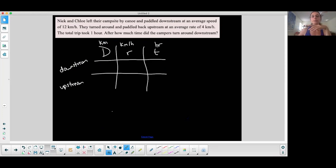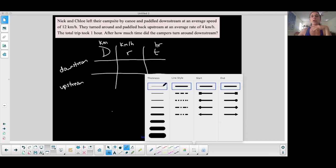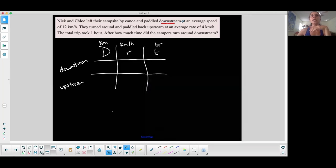All right, so downstream, let me color coordinate. Downstream, I have an average speed of 12 kilometers per hour. So my rate downstream is 12 kilometers per hour. I don't really know how long, I don't know how long I did that for. So I don't know anything else. Let's go to the next one.